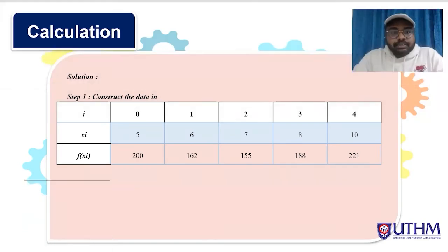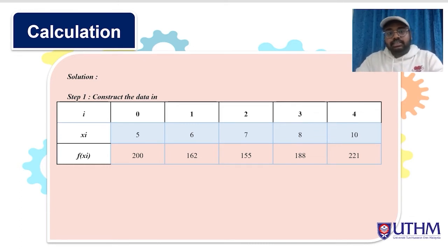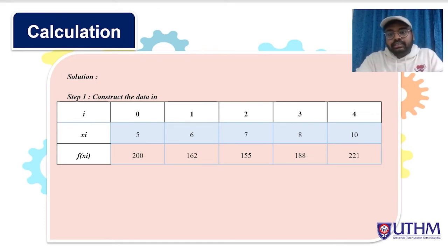Today I'll be talking about the calculation based on the data we have collected. The first step is to construct the data into a table format, with i values of 0, 1, 2, 3, and 4; x values of 5, 6, 7, 8, and 10; and f(x) values of 200, 162, 155, 188, and 221.